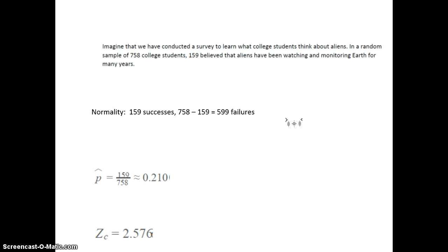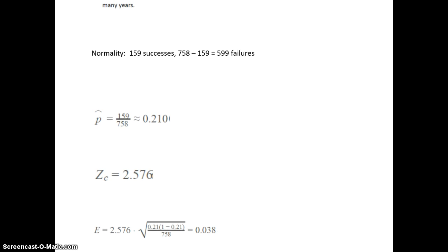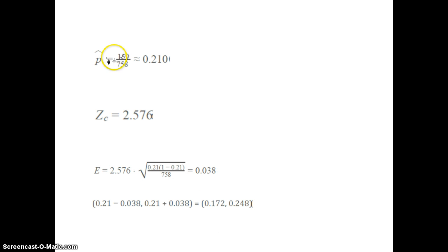Let's look at an example. A survey was conducted on what college students think about aliens. In a random sample of 758 college students, 159 believe aliens have been watching and monitoring the Earth for many years. Normality is met: there are 159 successes and 758 minus 159 equals 599 failures — both are greater than or equal to 10. The p-hat value is 159 over 758, which equals 0.21.